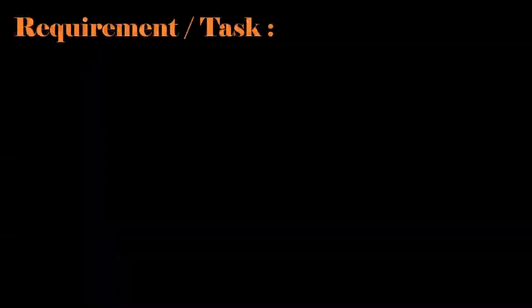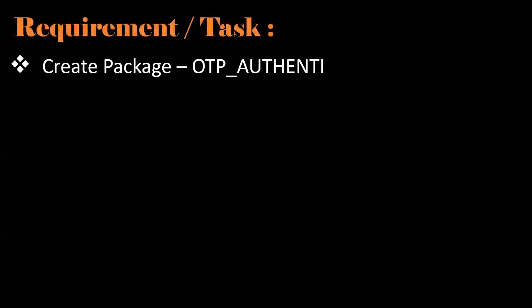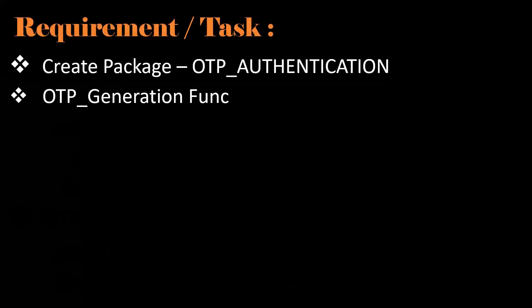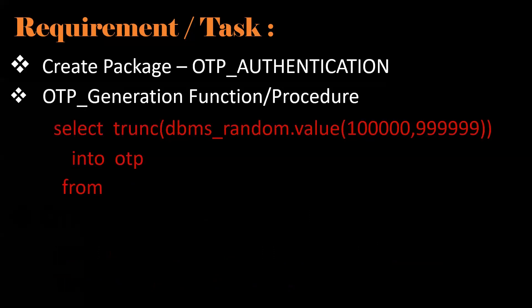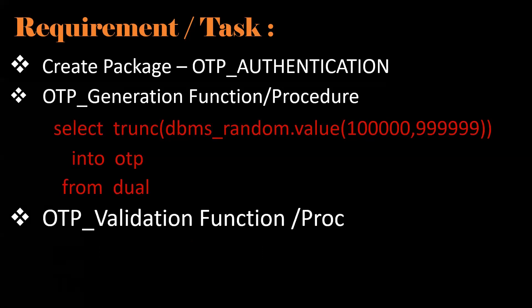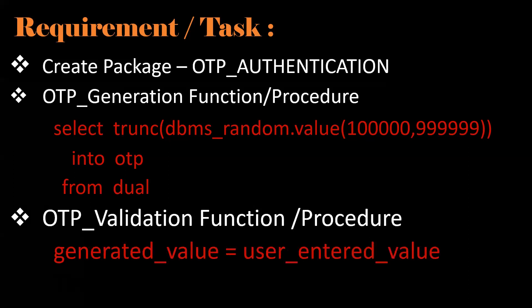To learn and improve your PL/SQL skills, take this topic as a challenge and try to create one OTP authentication package. In this package, create one function as your choice — that is the OTP generation function. In this function, we need to generate the OTP. And create one more function that is the OTP validation function. In this function, we need to validate whether the generated value equals the user-entered value. If it matches, then it is success. If it does not match, we need to throw an error. Also, put one more condition: the generated OTP value and the user-entered OTP value should be within 60 seconds. If the user enters after more than 60 seconds, then we need to say this OTP is invalid. If you try to achieve these things, your coding skills and logical skills can be improved.